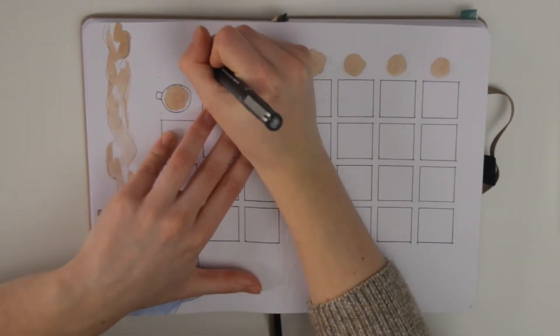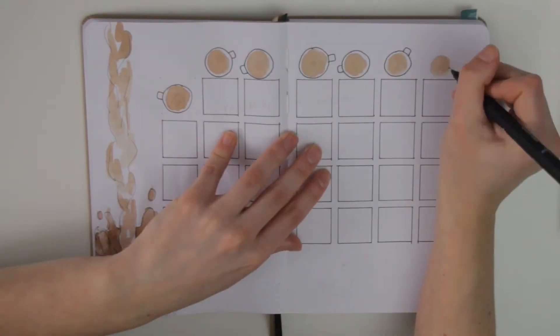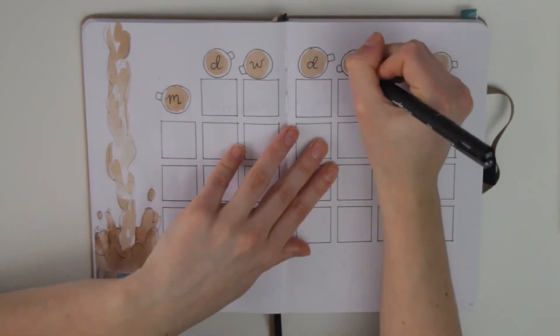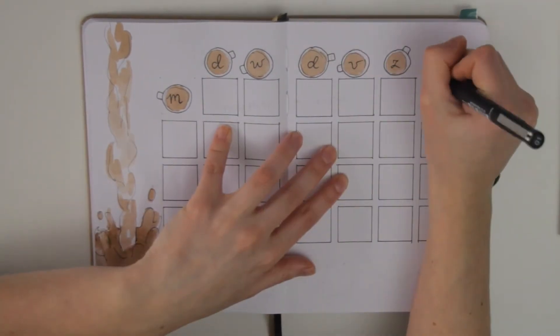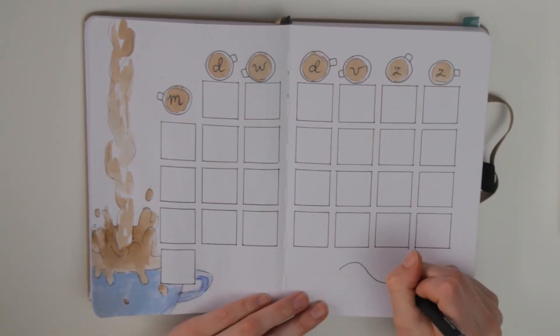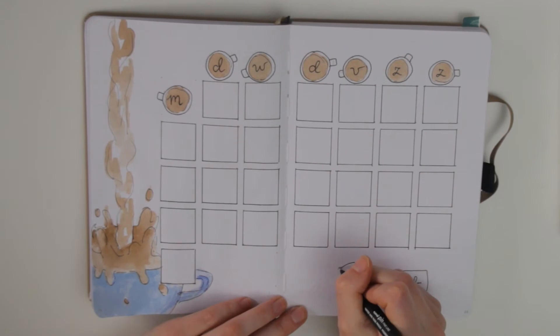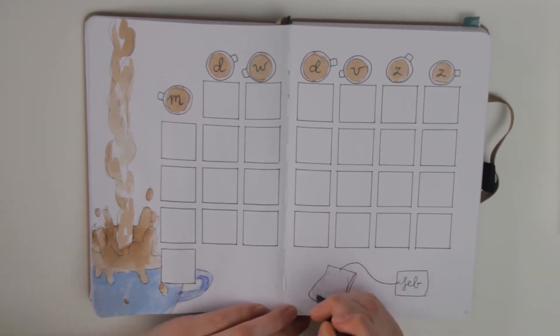And as you can see, each day of the week is a tea cup which I think is really cute. And then on the bottom right I made a tea bag and the tag says Feb from February of course.